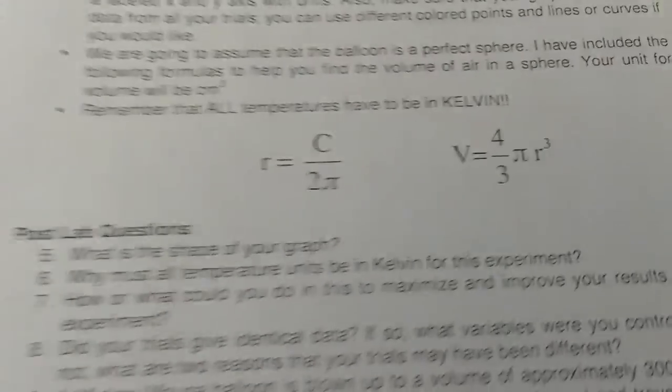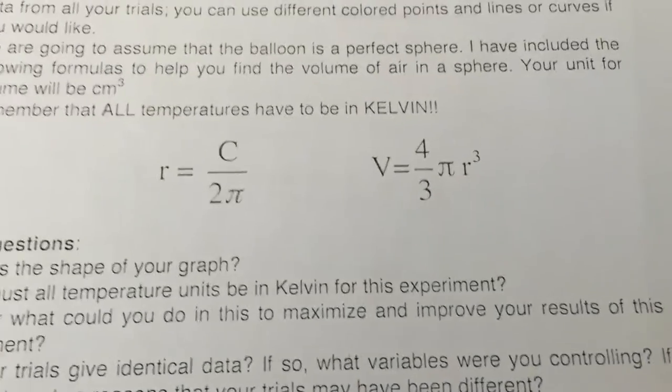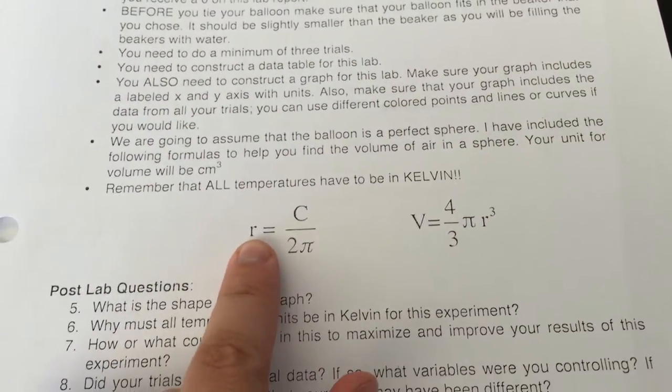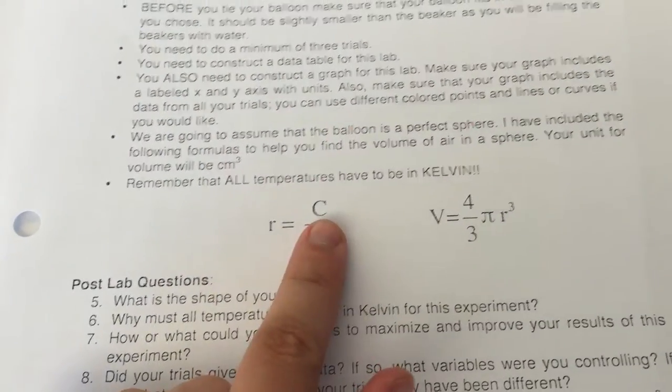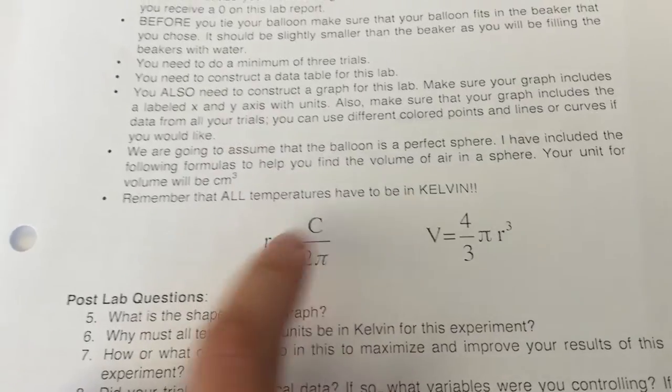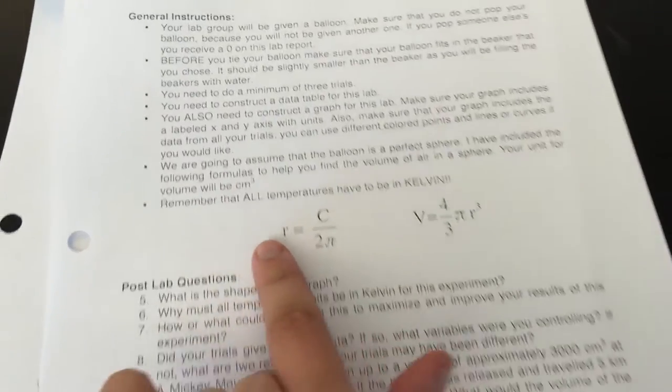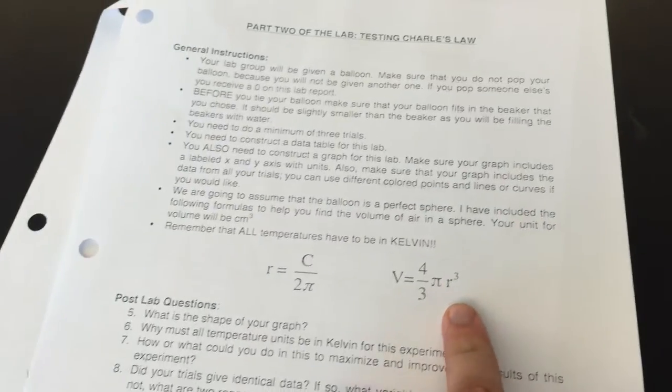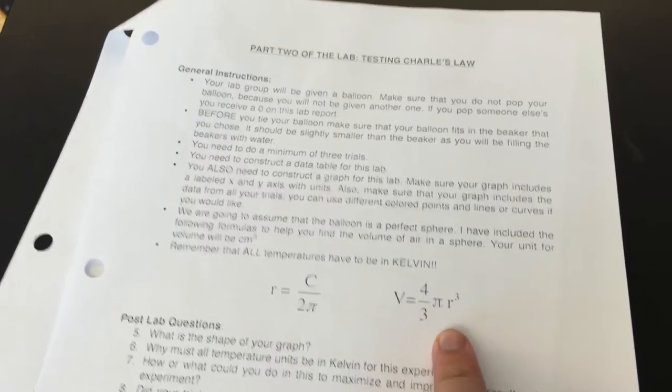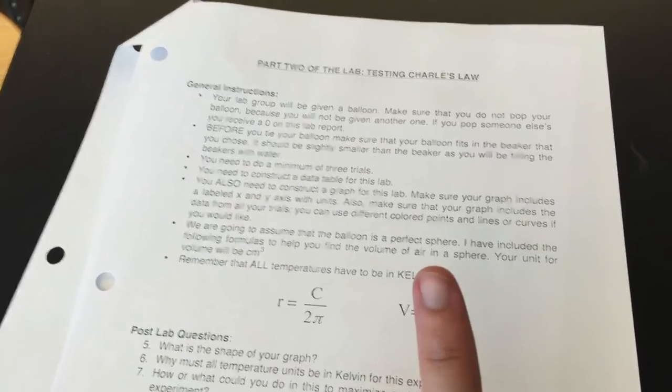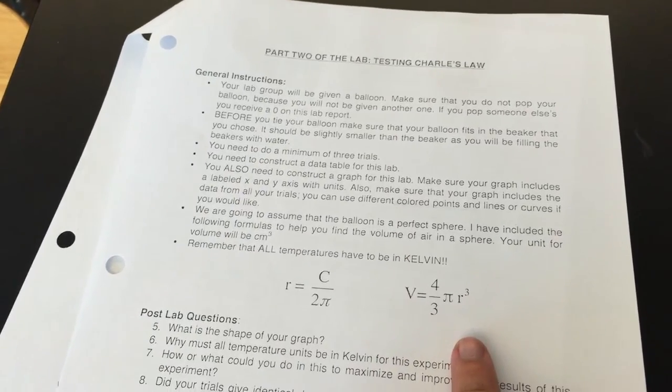Now, finally, how are we going to actually get volume from this information? Well, we have these two equations. This gives us our radius, which is why we are finding the circumference of our balloon. So circumference divided by 2 times pi, that gives us the radius. Then we can plug that into how to find the volume of a sphere. And then you just plug in the radius here, and you're going to get a volume in centimeters cubed, cubed centimeters or milliliters.